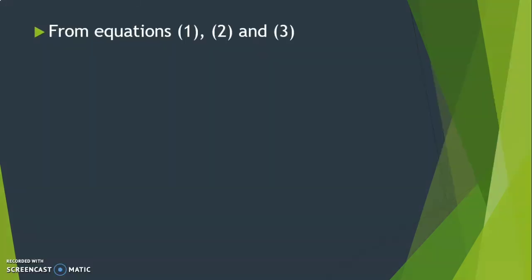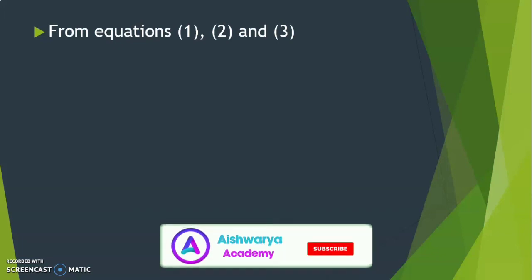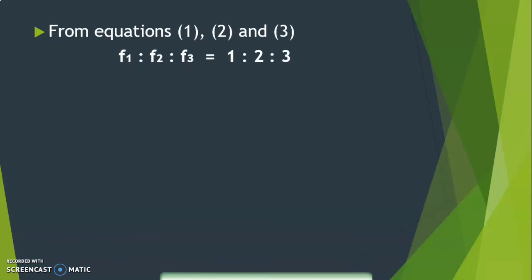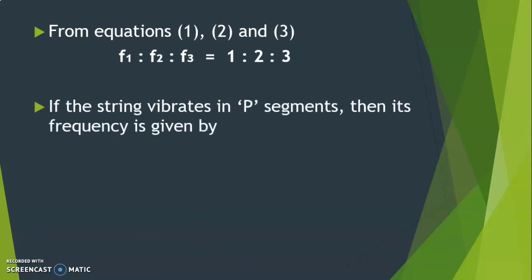From equations 1, 2 and 3, taking the ratio of frequencies of vibrations, we get f1 is to f2 is to f3 equals 1 is to 2 is to 3. Therefore, if the string vibrates in P segments, then its frequency is given by f equals P by 2L times root T by m, where P equals 1, 2, 3, 4 and so on till n.